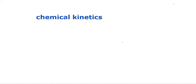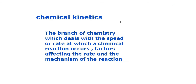In this video, we will be talking about chemical kinetics. The branch of chemistry which deals with the speed or rate at which a chemical reaction occurs, factors affecting the rate, and the mechanism of a reaction is called chemical kinetics. We study the speed of reactions, the factors affecting the rate, and the mechanism happening in steps. All of these things we study in chemical kinetics.